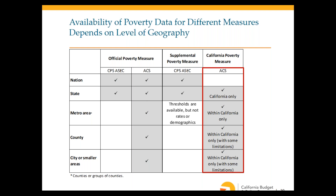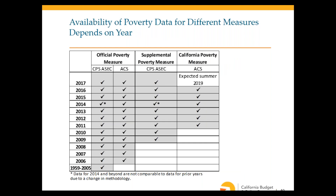In terms of the years for which these measures are available: the official poverty measure has been produced since 1959 in the CPS (for state-level geography), and since 2006 in the ACS (for smaller geographies including cities). The supplemental poverty measure is available back to 2009, and the California poverty measure is available back to 2011.